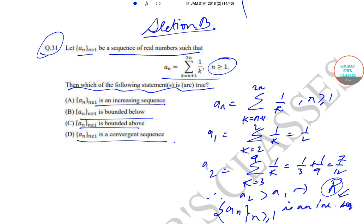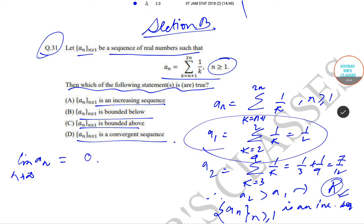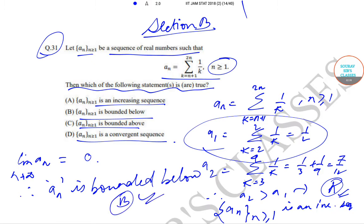For the bounded below part: as a_n increases, we know a_n starts from 1/2 and is increasing. Since it is an increasing function starting at 1/2, it is definitely bounded below. So option B is also correct.